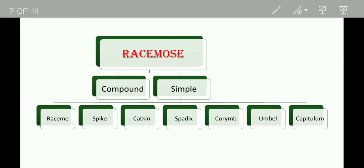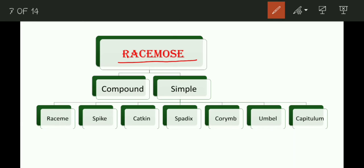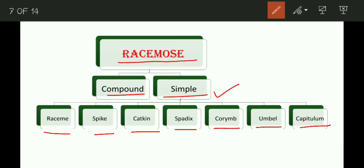Racimose has two main types: compound and simple. We will study the simple racimose type first. There are seven types of simple racimose: raceme, spike, catkin, spadix, corymb, umbel, and capitulum.